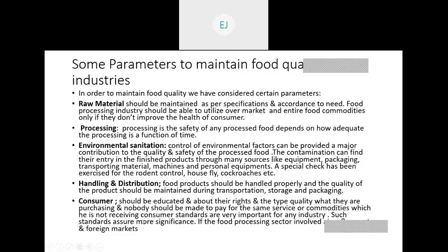Our last parameter is the consumer. Your consumer is very important, so whenever you prepare any food, you have to keep in mind your consumer so that they can get the standard and safe food. If we can maintain these parameters in different kinds of food industries according to the requirements, then we can maintain the quality of food in our food industries.